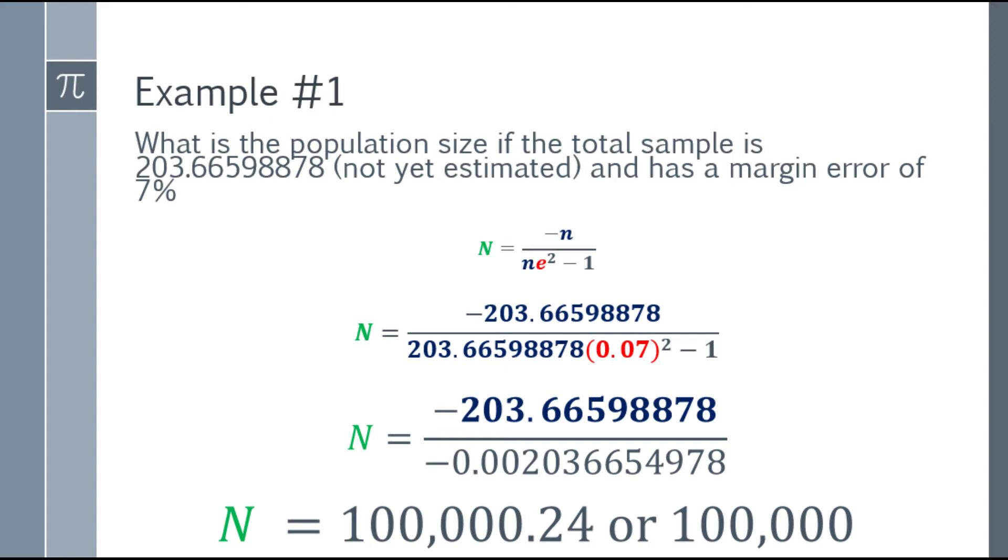If you do it directly in the calculator, I animated the other decimals here. If we're going to estimate that, it will be 100,000. So the population size, the total population size in this problem, will be 100,000. If we have a total sample of 203.66 and decimal not yet estimated, and a margin of error of 7%, you will have a population size of 100,000.